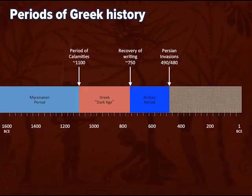The thing that ends the Dark Age and makes it into the Archaic Period is the recovery of writing somewhere in the middle of the 8th century. The Archaic Period itself comes to an end at the great turning point — the Persian invasions of 490 and 480. This crystallizes the Greek community, speeding them toward the cultural ferment of the 5th century and the Classical Period.